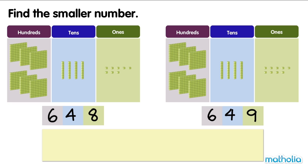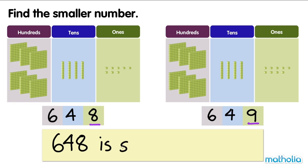To compare the numbers, we start by comparing the digits in the hundreds place. Six is the same as six. The digits are the same, so we move on to compare the digits in the tens place. Four is equal to four. The digits are the same. Eight is smaller than nine, so we move on to compare the digits in the ones place. Eight is smaller than nine. So, six hundred and forty-eight is smaller than six hundred and forty-nine.